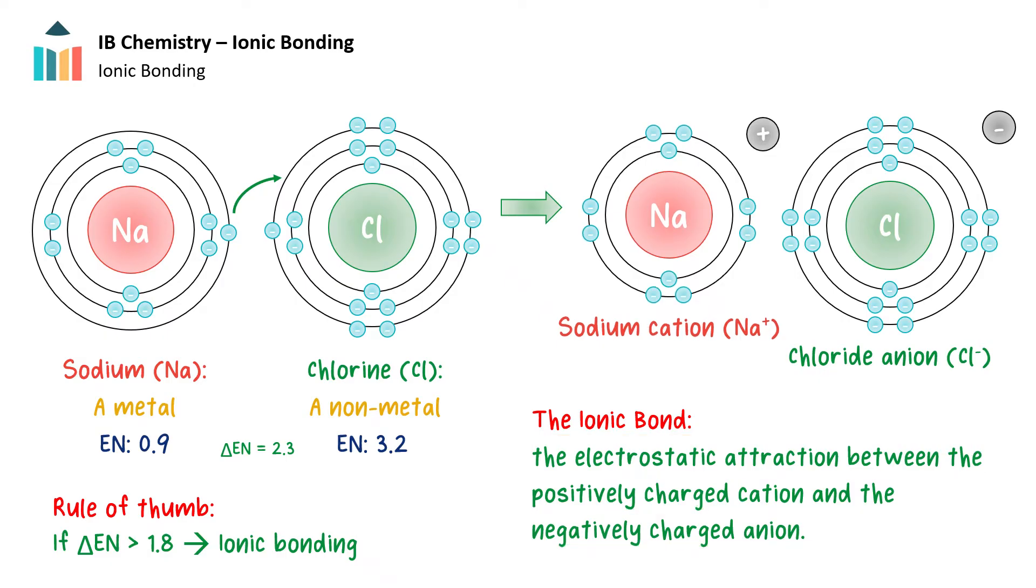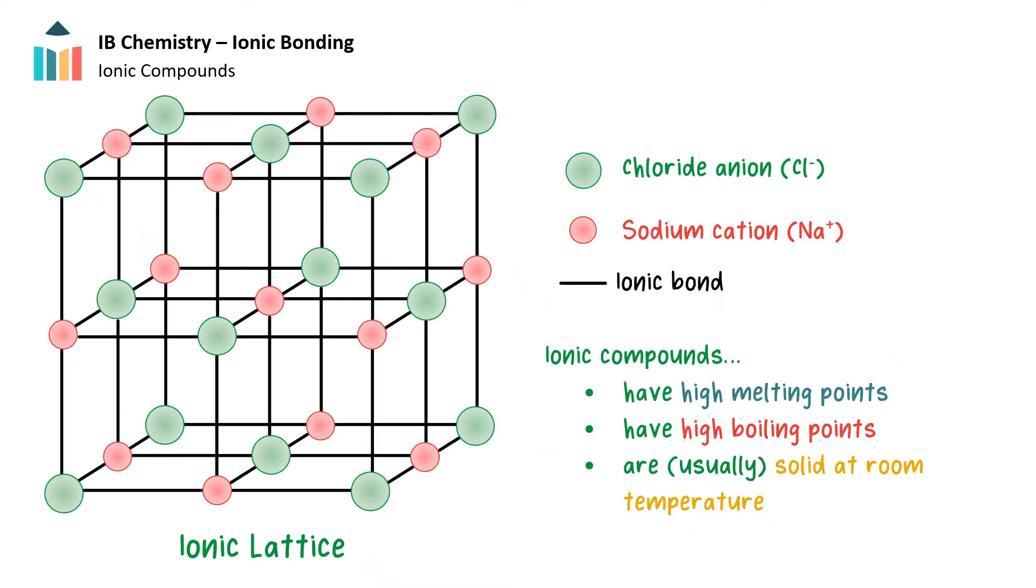So now we know how ionic bonds form, but what do ionic compounds look like at a molecular level? How do the ions arrange themselves? The ions that compose an ionic compound form a crystalline structure called an ionic lattice. An ionic lattice refers to the arrangement of ions in a regular, three-dimensional pattern in an ionic compound.